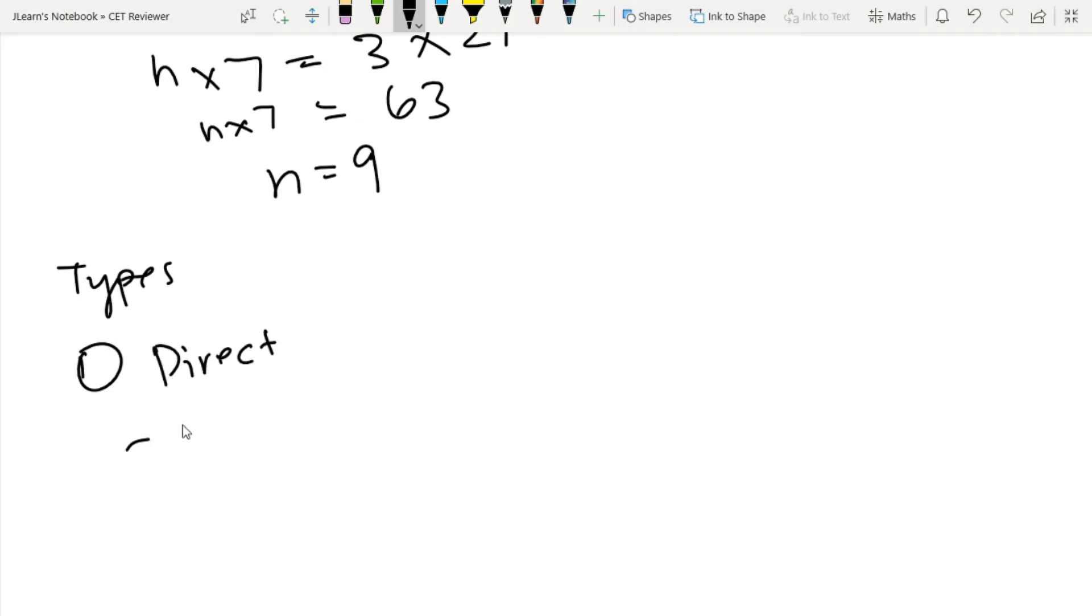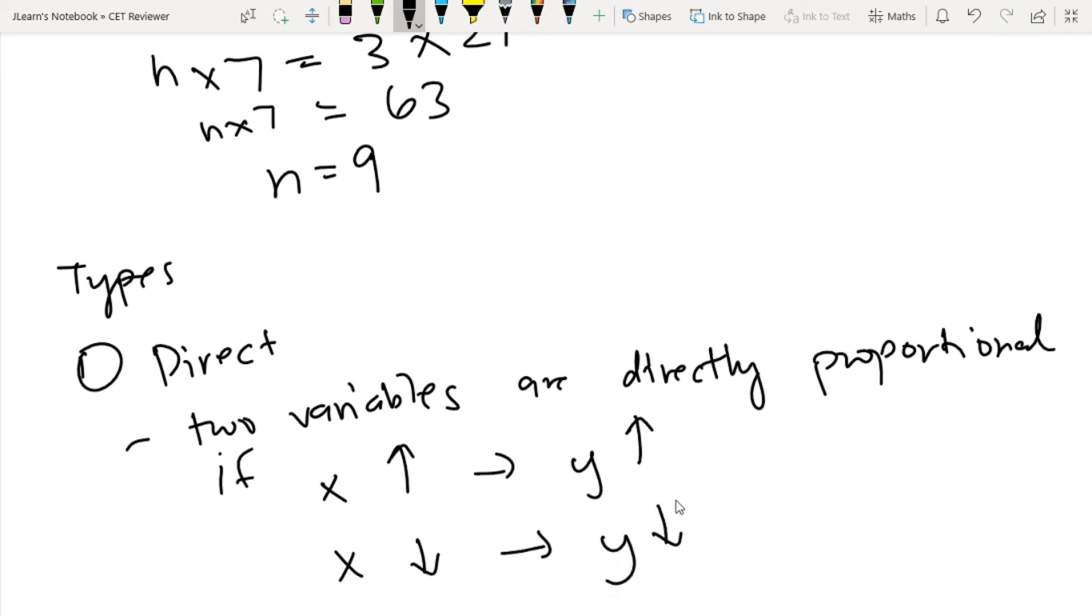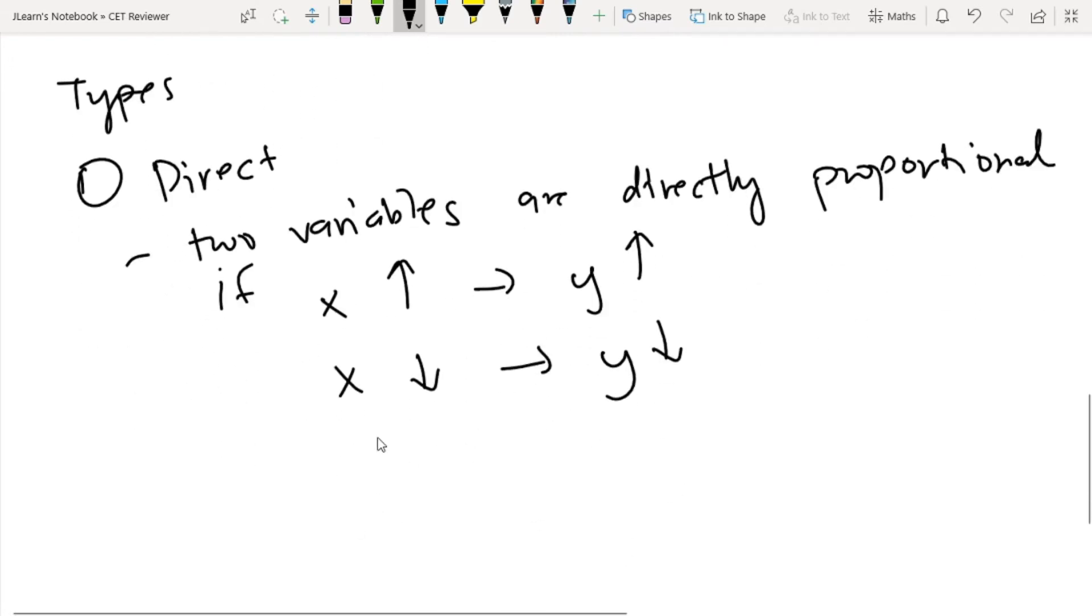In direct proportion, two variables are directly proportional if x increases, y also increases, or if x decreases, y also decreases. Meaning the ratio of x over y is always the same.